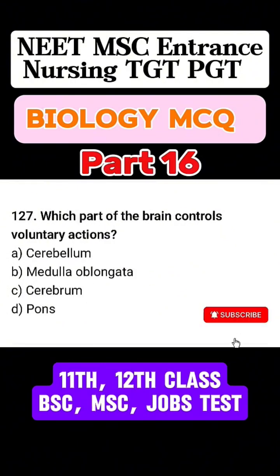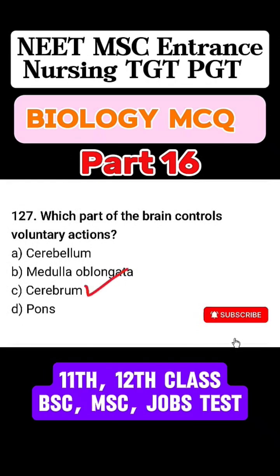Question 127. Which part of the brain controls voluntary action? Correct answer is option C. Cerebrum.